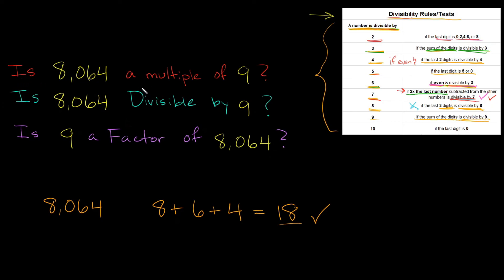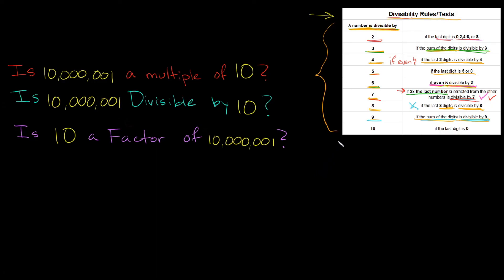So is 8064 a multiple of 9? Yes. Is it divisible by 9? Yes. Is 9 a factor of 8064? Yes. Lastly, we have 10 — and it's an easy one. A number is divisible by 10 if the last digit is 0.